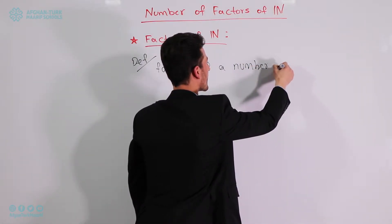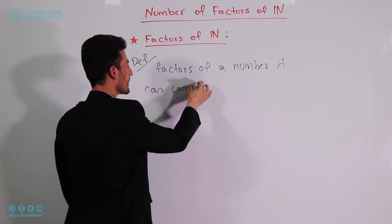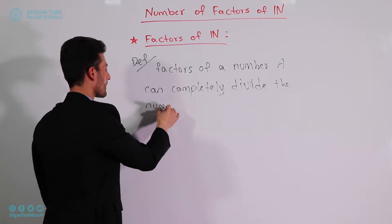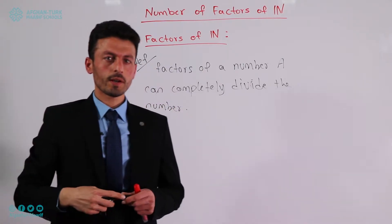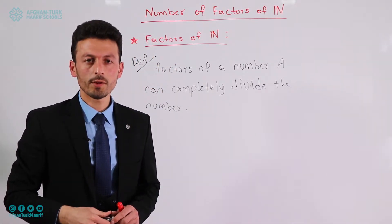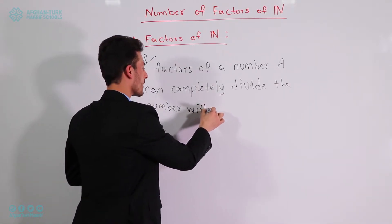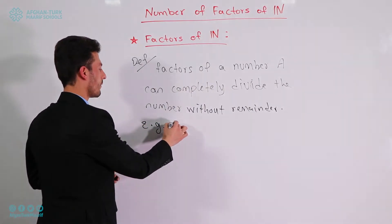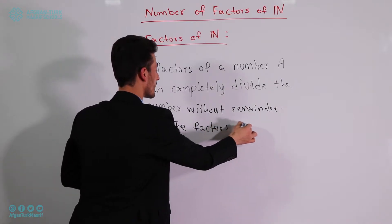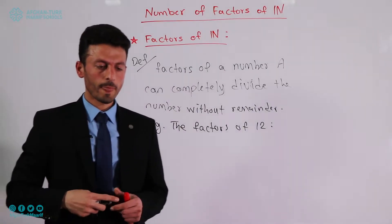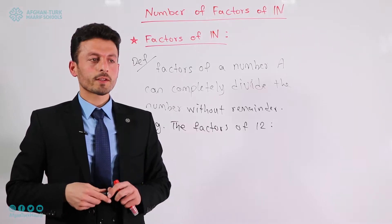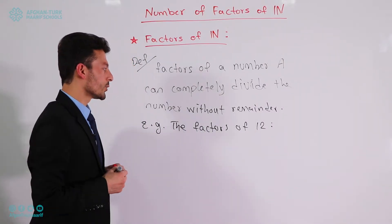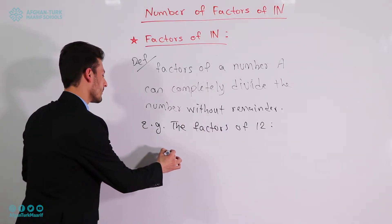A factor of a number is a number which can divide it completely without any remainder. For example, let us find the factors of 12. As mentioned in the definition, factors are all the numbers which can completely divide 12. Let us check starting from 1 — 12 can be completely divided by 1, so 1 is a factor of 12.